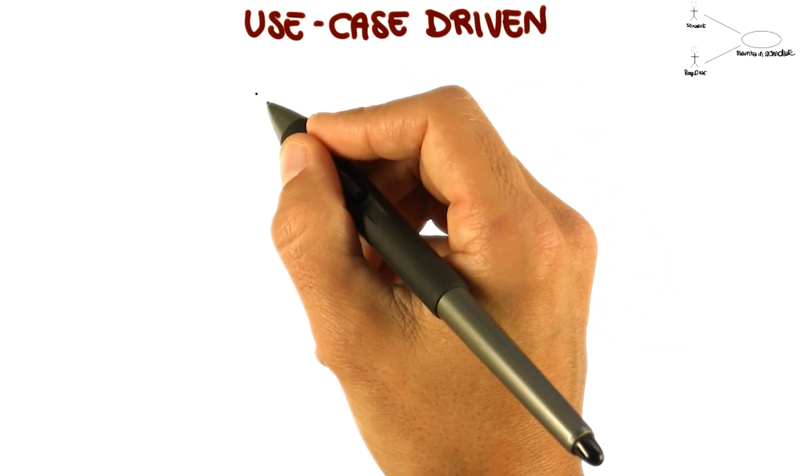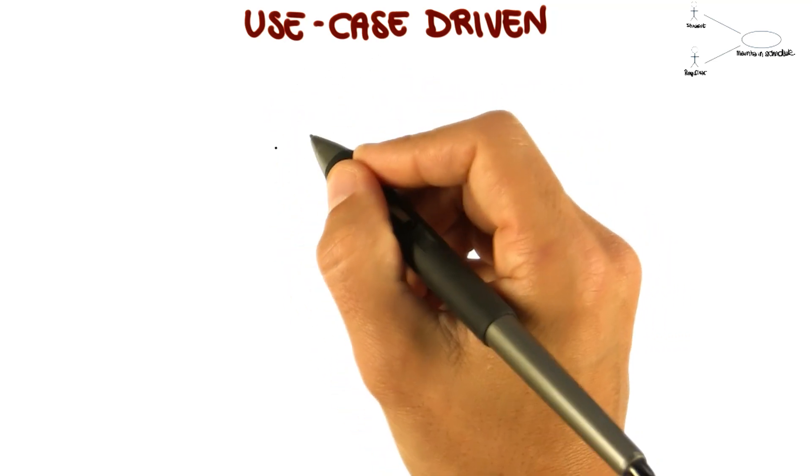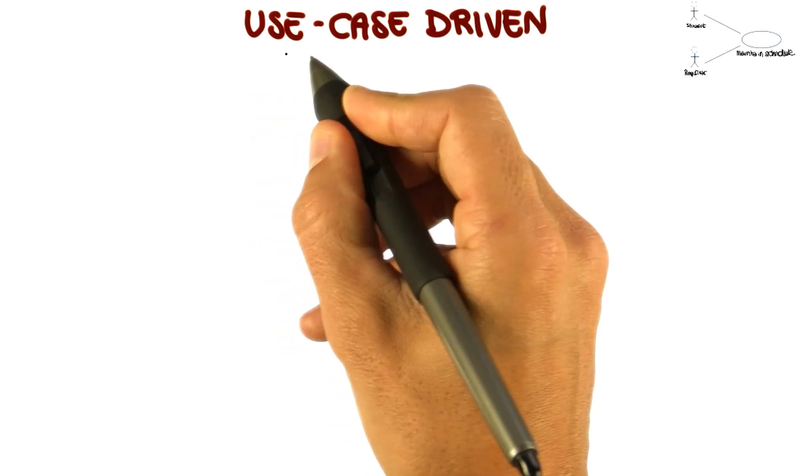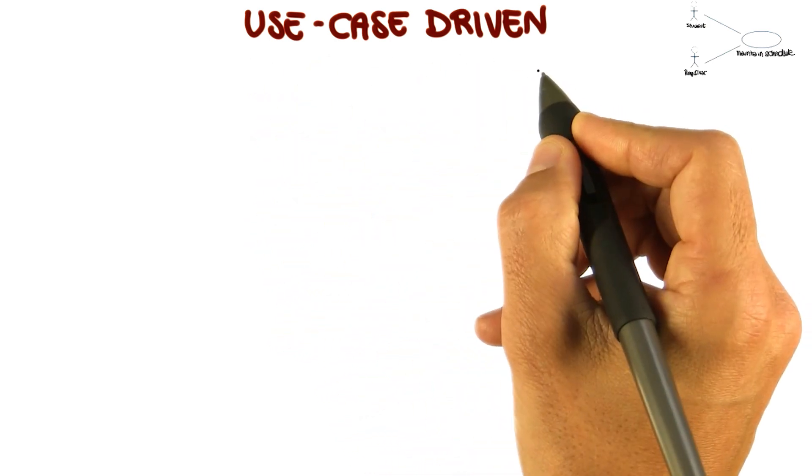Let's go back to the distinguishing aspects of RUP, starting from the first one. The Rational Unified Process is use case driven. Let's see what that means.